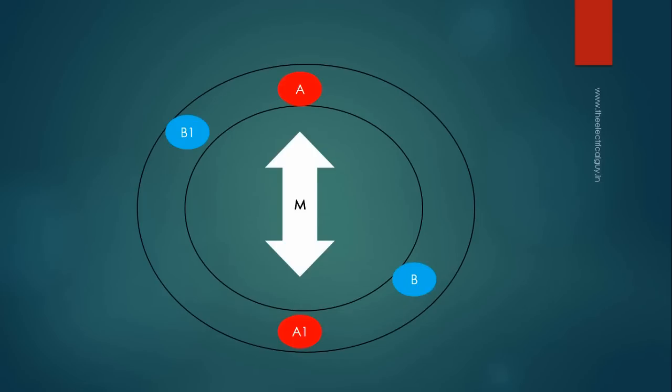Again consider our two-phase generator, but this time we will add one more winding CC1 and will place these three windings 120 degrees apart from each other as shown.